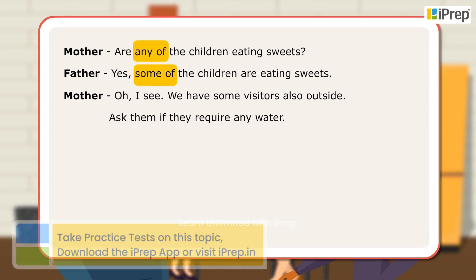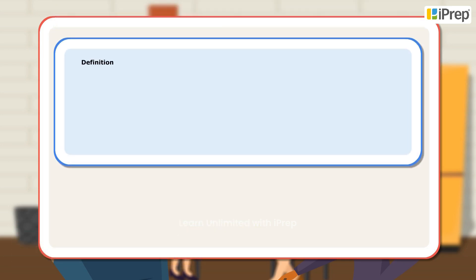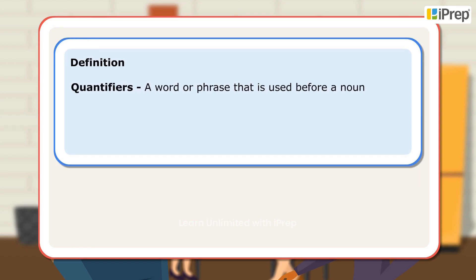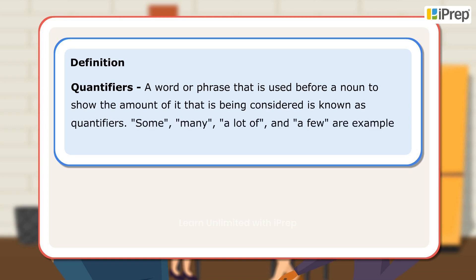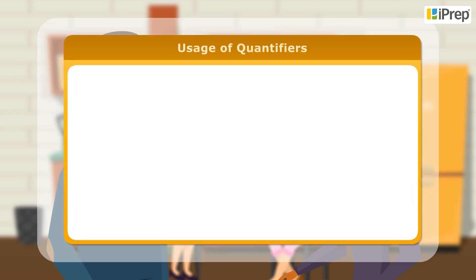Definition: A word or phrase that is used before a noun to show the amount of it that is being considered is known as a quantifier. Some, many, a lot of, and a few are examples of quantifiers.